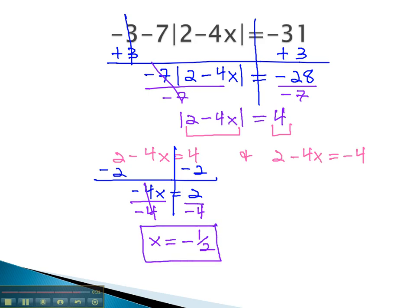The second equation solves almost identical, starting by subtracting 2 from both sides. Negative 4x equals negative 6. Finally, divide both sides by negative 4. This leaves us with x equals, now positive, 3 halves.